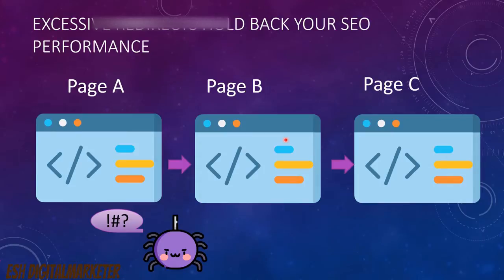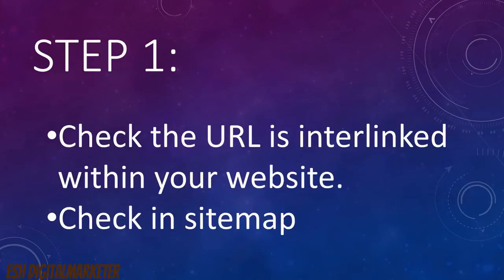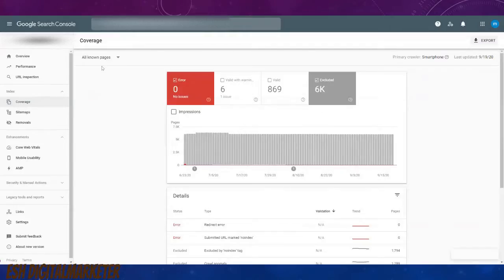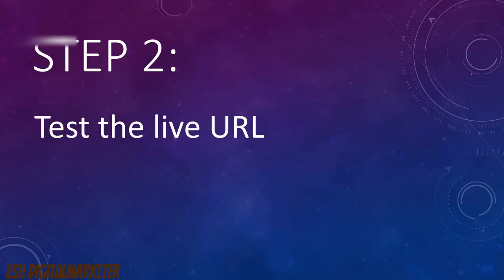First, check where the URL is located — whether it is within the website or from external resources. Go to your coverage report and check all known pages, whether they are submitted in a sitemap or as submitted pages. If the URL is listed under the sitemap, take immediate action to fix the issue.